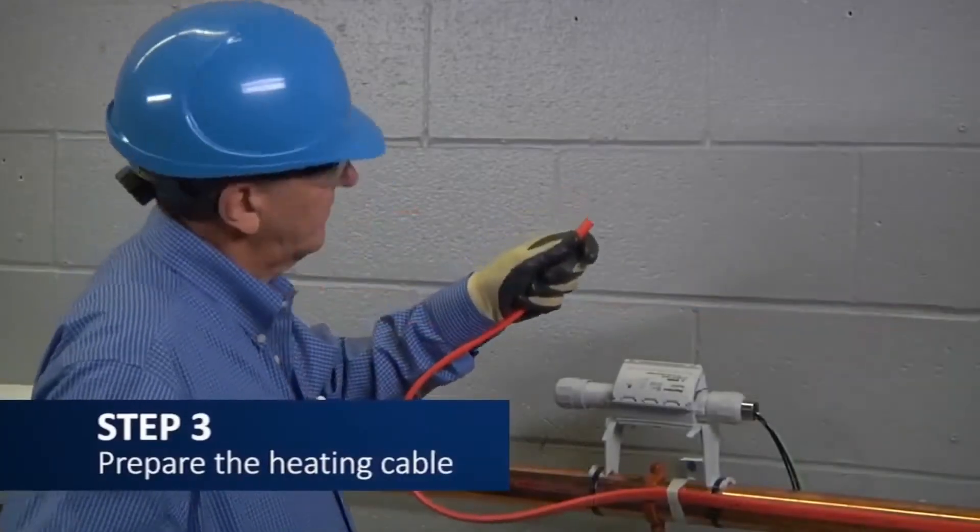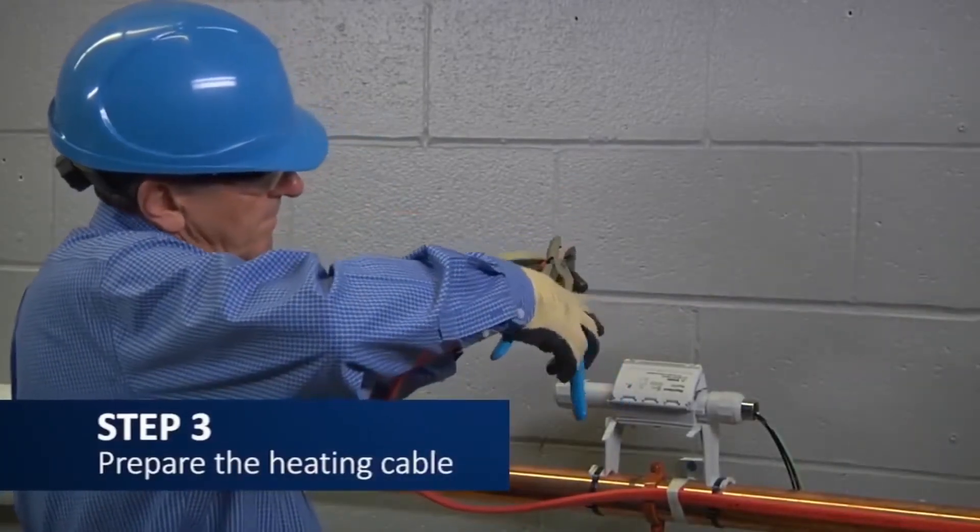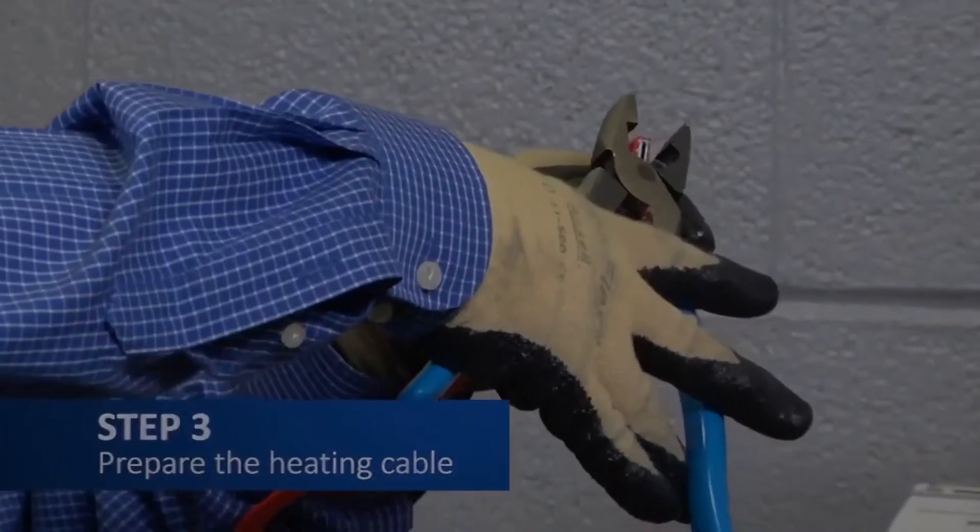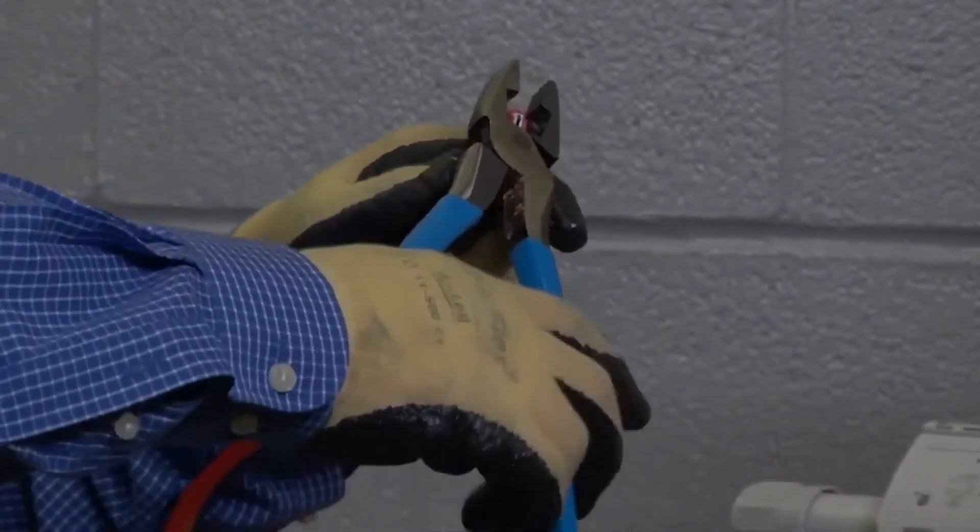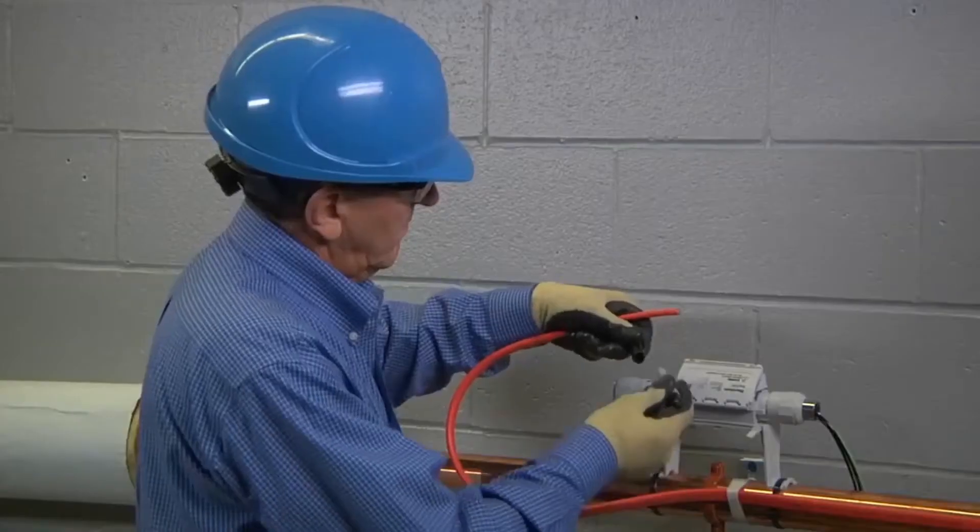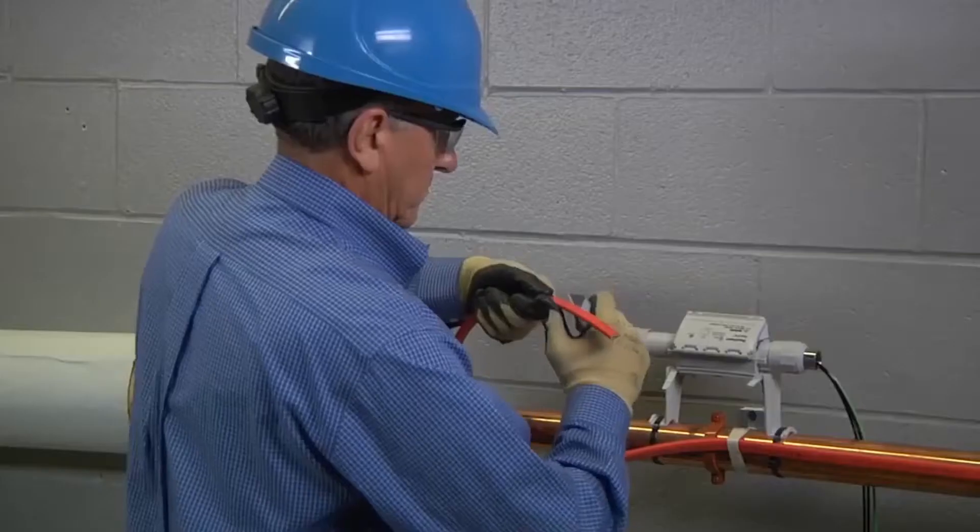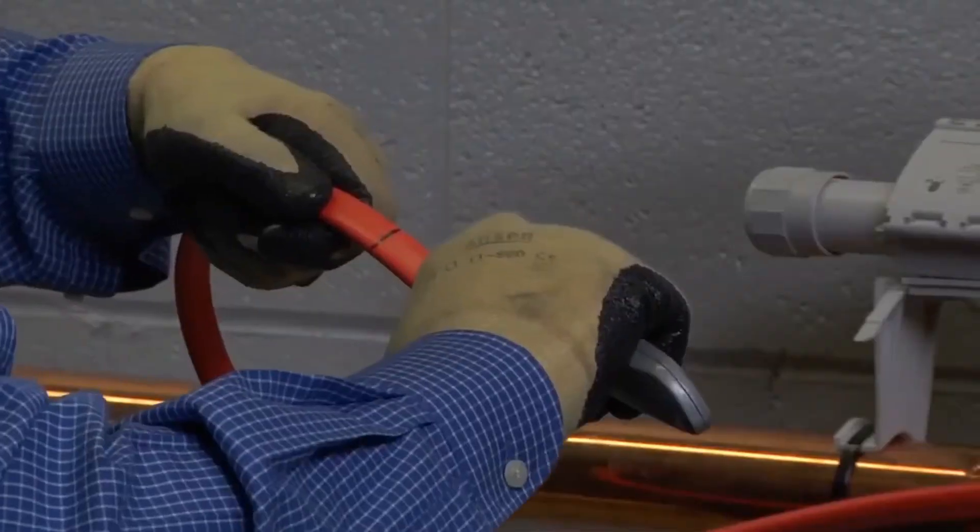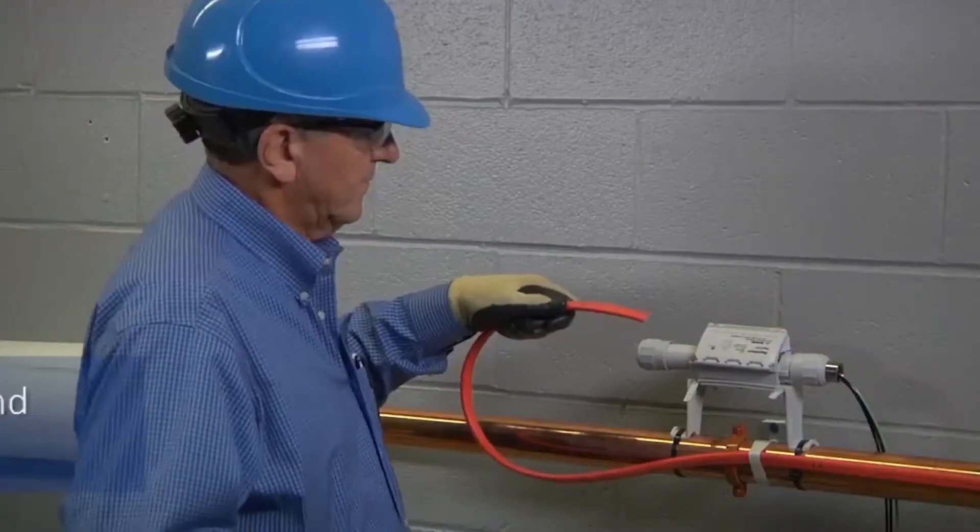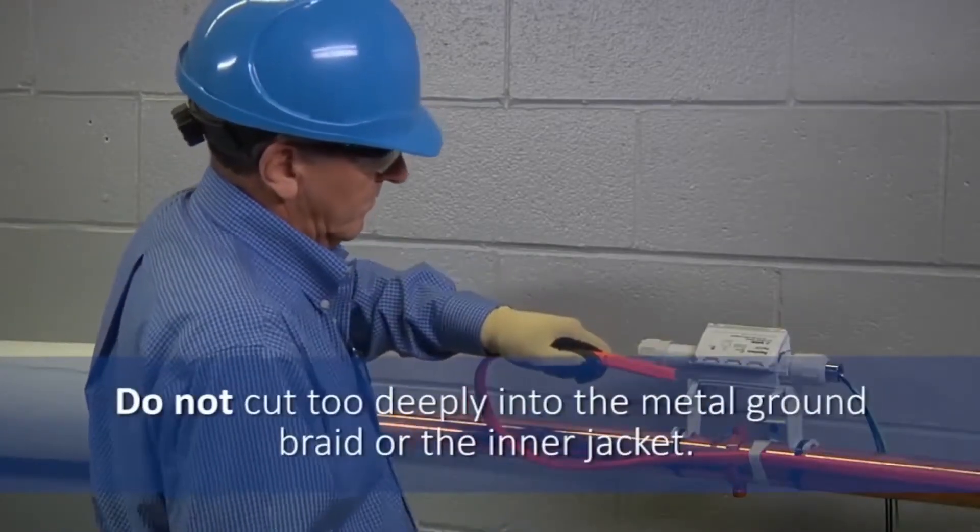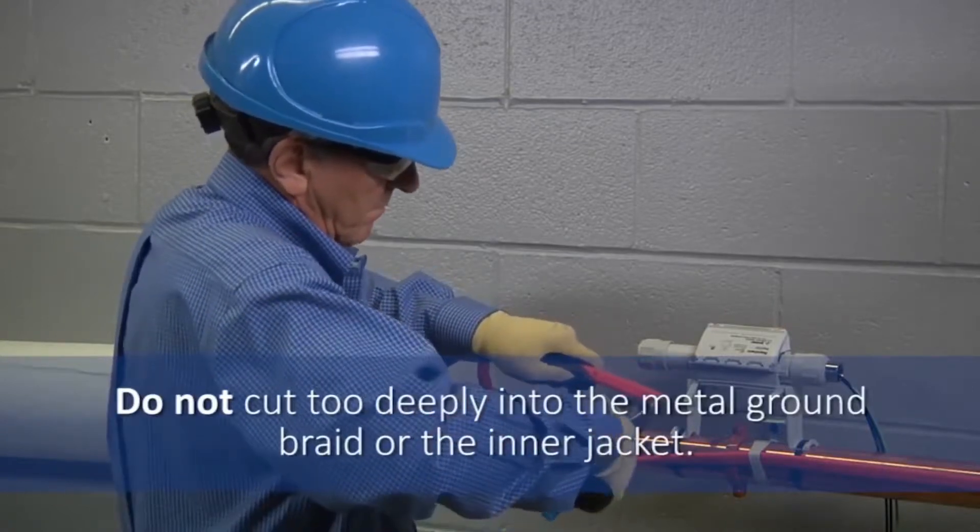Now, to install the RayClick, take the end of your heating cable to be connected - HWatt in this case - and cut the end square with your wire cutters. Place a mark three and one-eighths of an inch from the end of the cable, and score around and down the middle towards the end of the cable, being careful not to cut too deeply into the metal ground braid or the inner jacket.